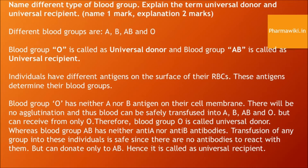Blood group AB has neither anti-A nor anti-B antibodies. Transfusion of any blood group into these individuals is safe since there are no antibodies to react with them, but AB can donate to only A and B. Hence, blood group AB is called the universal recipient.